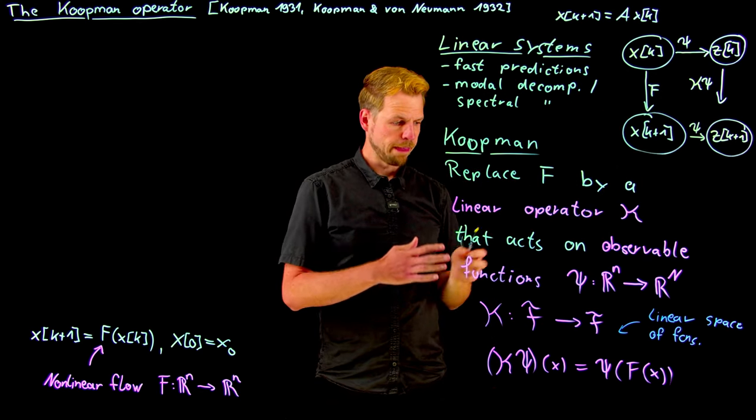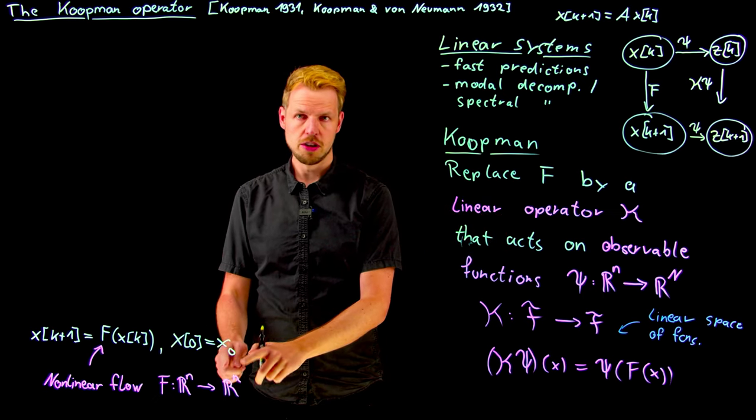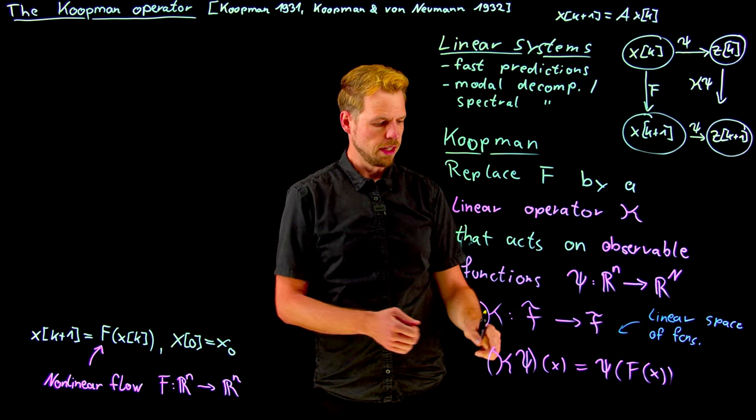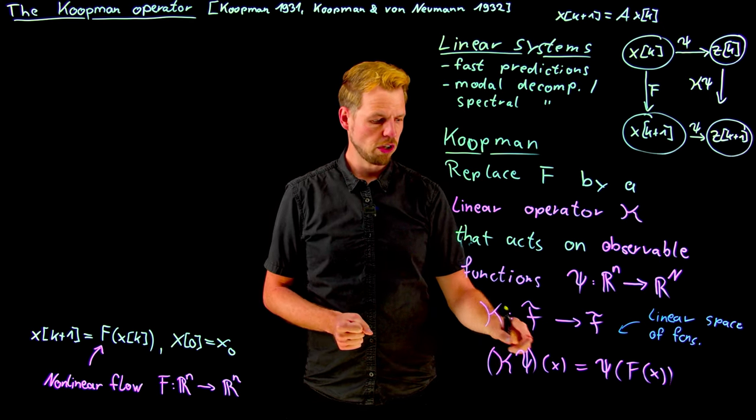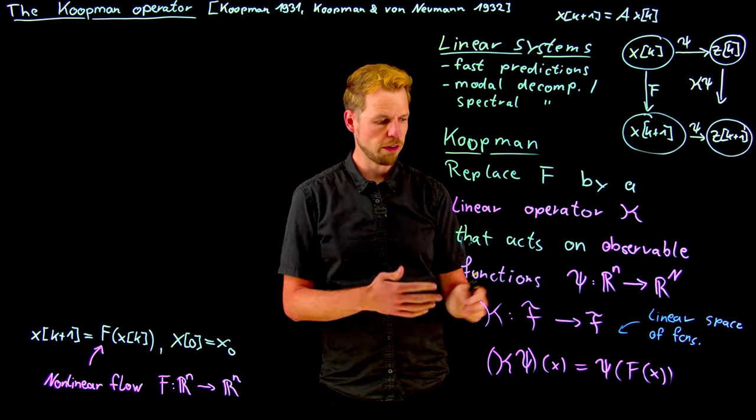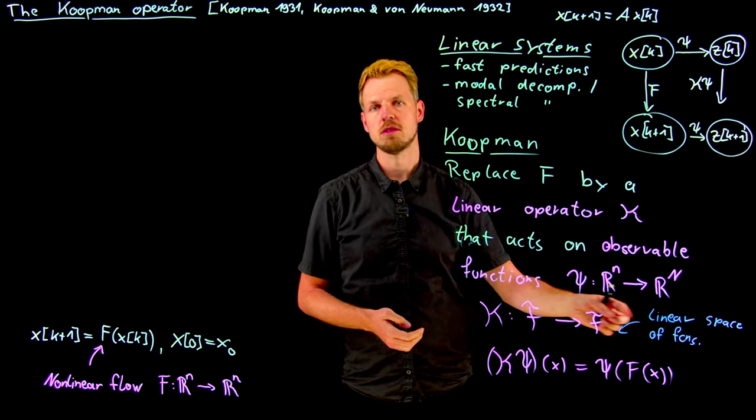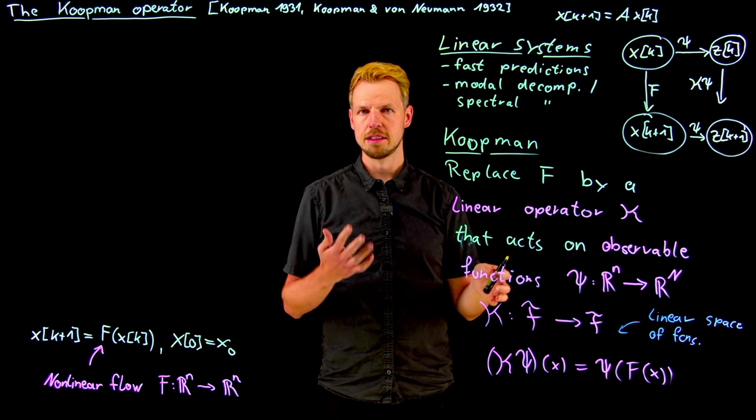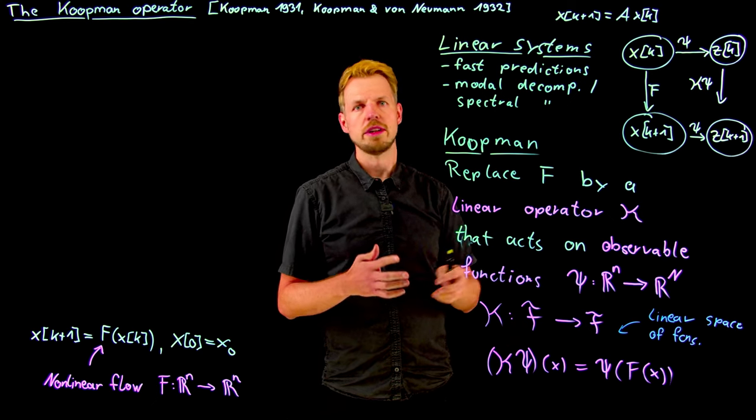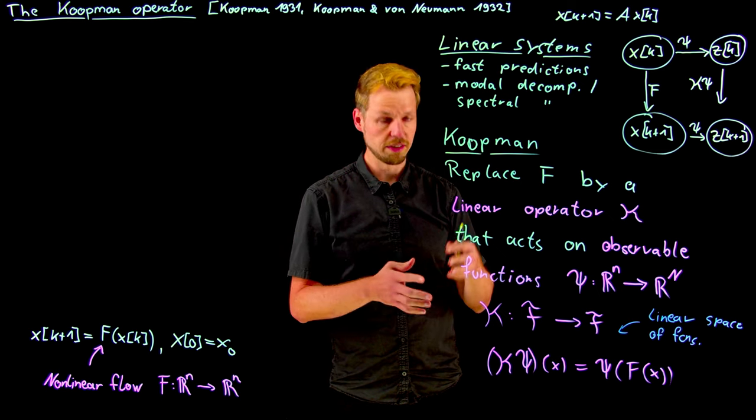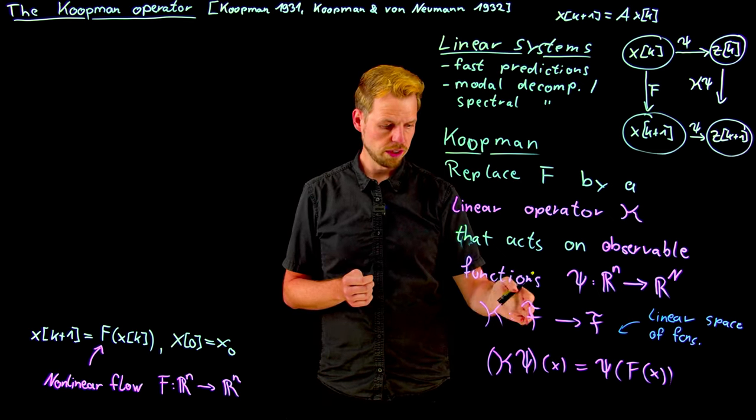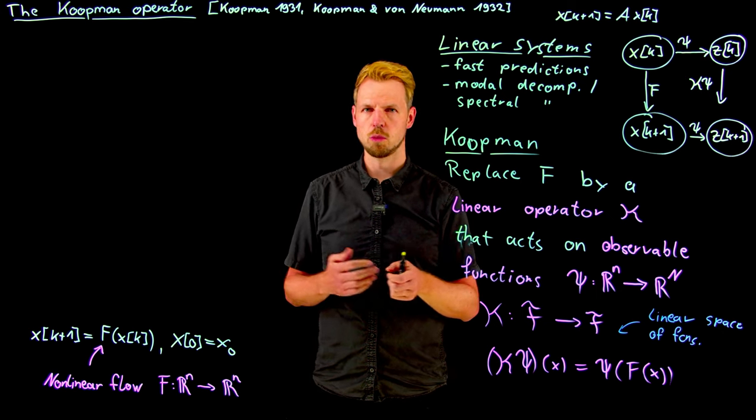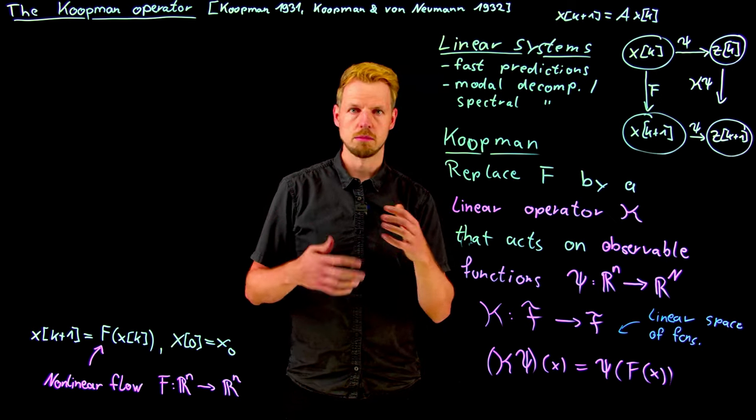And so what we have traded is a system, usually on a finite dimensional state space but a nonlinear mapping, by a linear operator that maps forward in time this observable function, but in a linear fashion. So we have to act on function spaces, on infinite dimensional spaces, so it's also an infinite dimensional operator, but it is linear. And so this is the trade-off that we are going to study. We are going to discuss details how to use this with modern numerical schemes, and then how to further use this in combination with control or other interesting tasks.